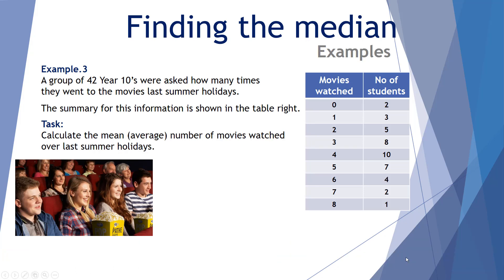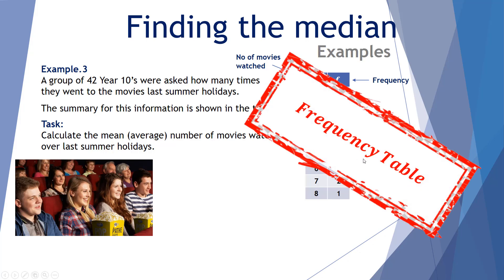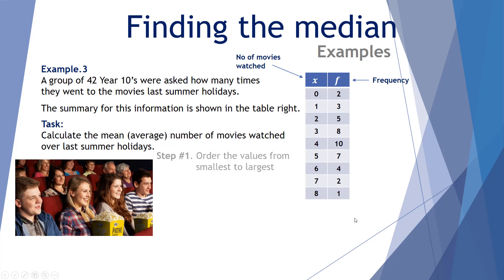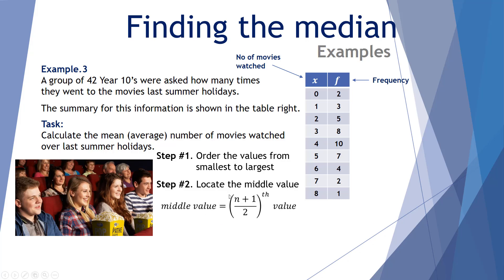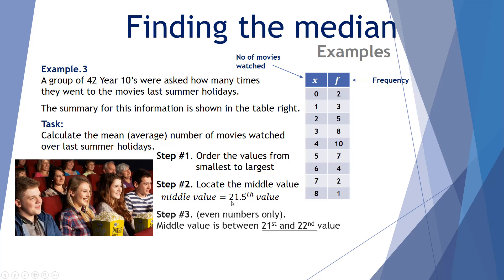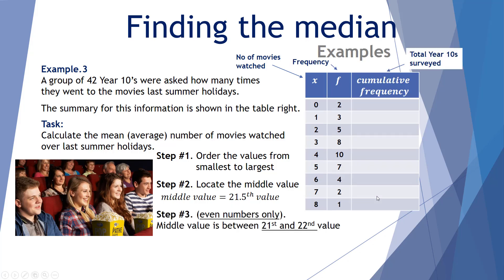Instead of writing out all values from zero to eight, we can use the table as a shortcut. We add a cumulative frequency column. There are 42 values recorded: (42 + 1) / 2 = 43 / 2 = 21.5, so it's between the 21st and 22nd value. The cumulative frequency column lets us track how many students are accounted for as we add each frequency row.